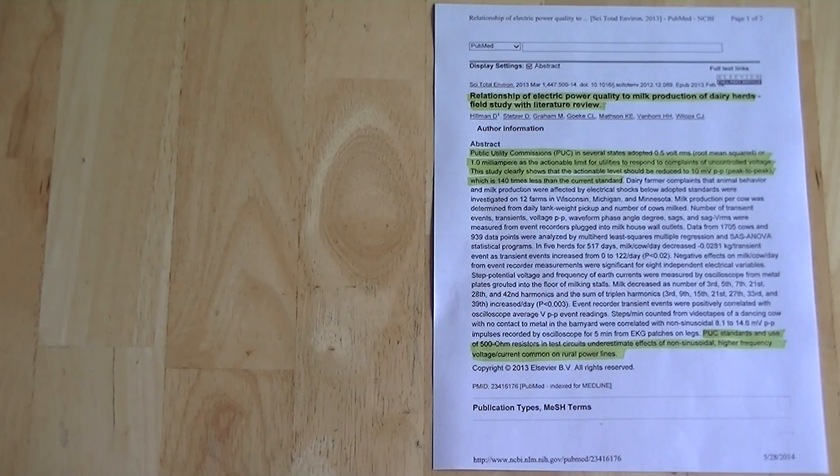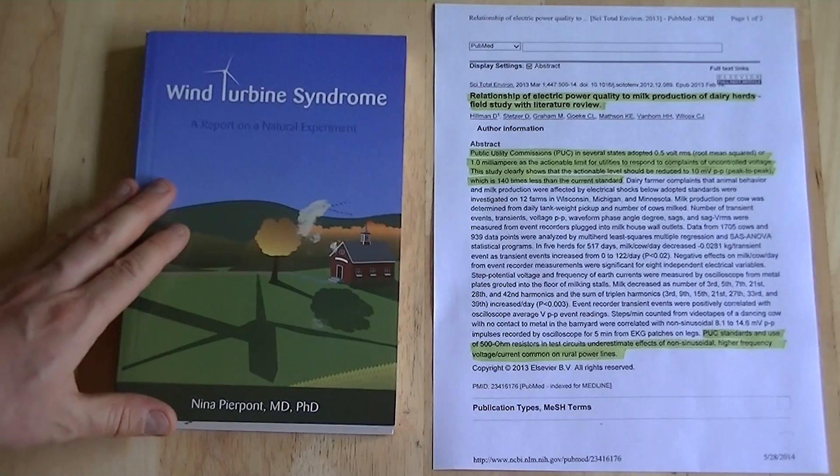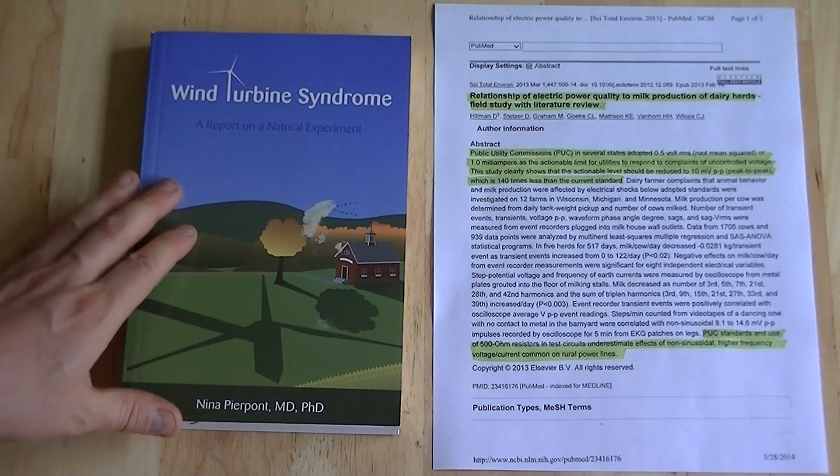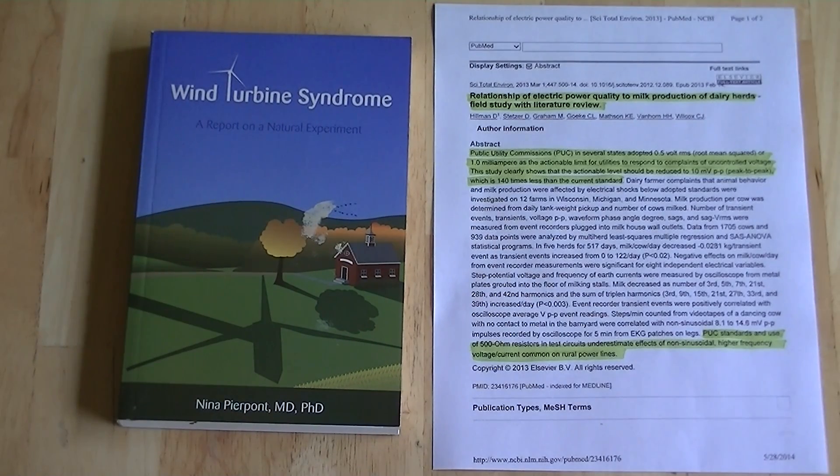There's another book that's reporting very similar findings around wind turbines. It's been noticed that when wind turbines get installed into an area, people start becoming sick. Then they look at the grounding systems and they find these stray voltage effects all over the grounding system.